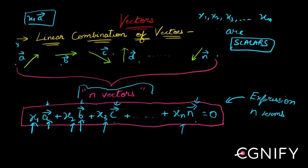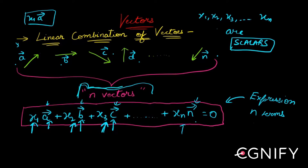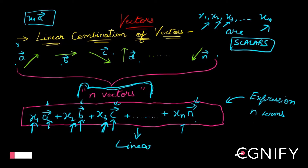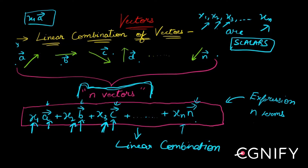What we are doing here is picking up a vector, multiplying it to a scalar, picking up another vector, multiplying that to a scalar, and so on. We've picked up all n vectors and multiplied each one to some scalar x1, x2, x3, up to xn, and equated it to 0. This itself is a linear combination — I'm calling it linear because I'm not squaring any vector, just multiplying by a scalar.